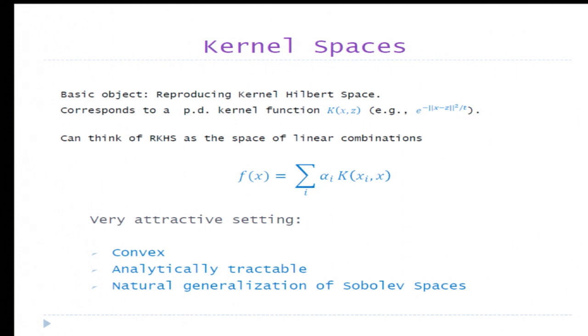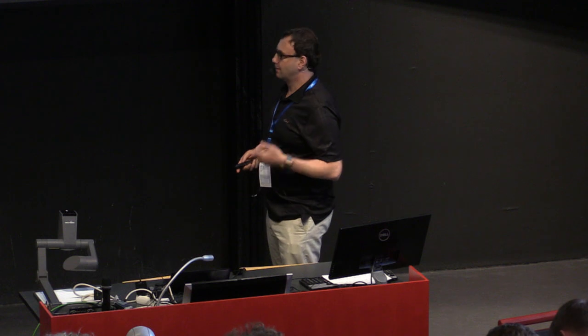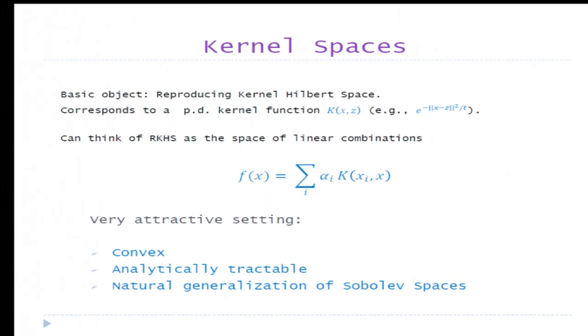But unlike Sobolev spaces which require defining derivatives, they don't need derivatives because they are defined in terms of kernels. For example, kernel spaces make sense on domains where derivatives are not defined, like discrete domains with discrete data.